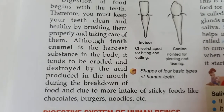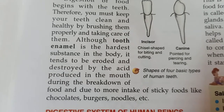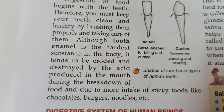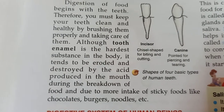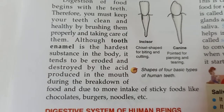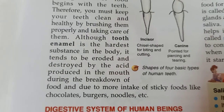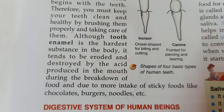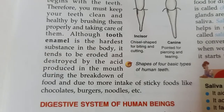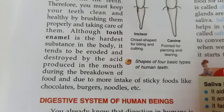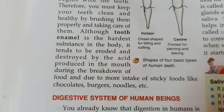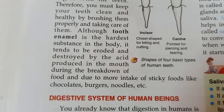Although tooth enamel is the hardest substance in the body, it tends to be eroded and destroyed by acid produced in the mouth. The upper layer of the tooth is known as tooth enamel and is the hardest layer in our body, but it gets eroded because of acids produced in our mouth and when we eat too much sticky food like chocolates, burgers, and noodles. In both cases the enamel gets damaged, so we must brush our teeth properly.